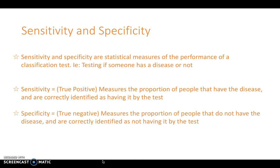Specificity refers to true negatives — the people who don't have the disease and the test genuinely says they do not have it. A good test has a good level of both sensitivity and specificity: it can pick out those who have the disease and accurately say yes, and those who don't have it and accurately say no.